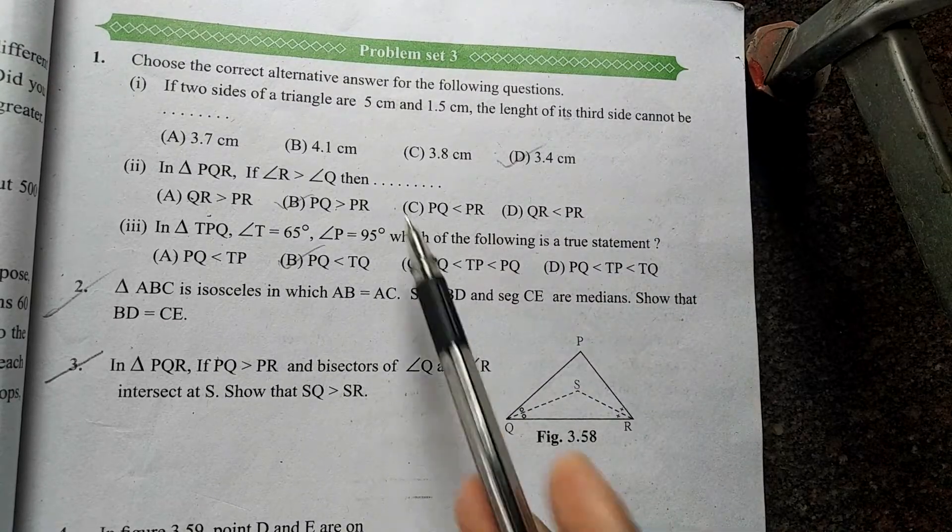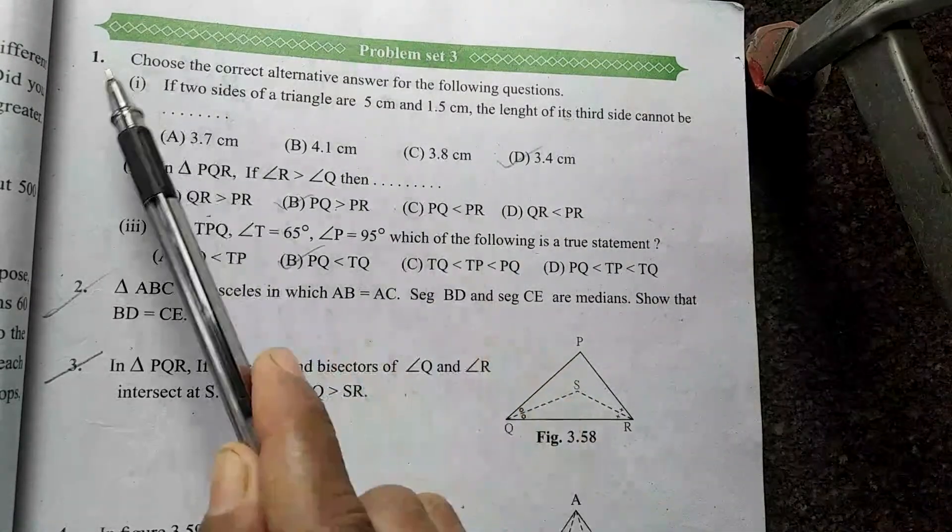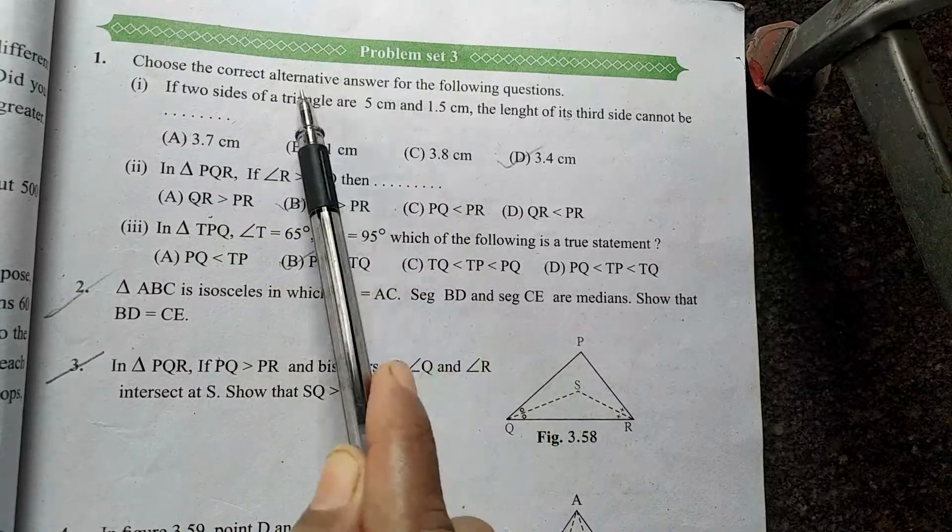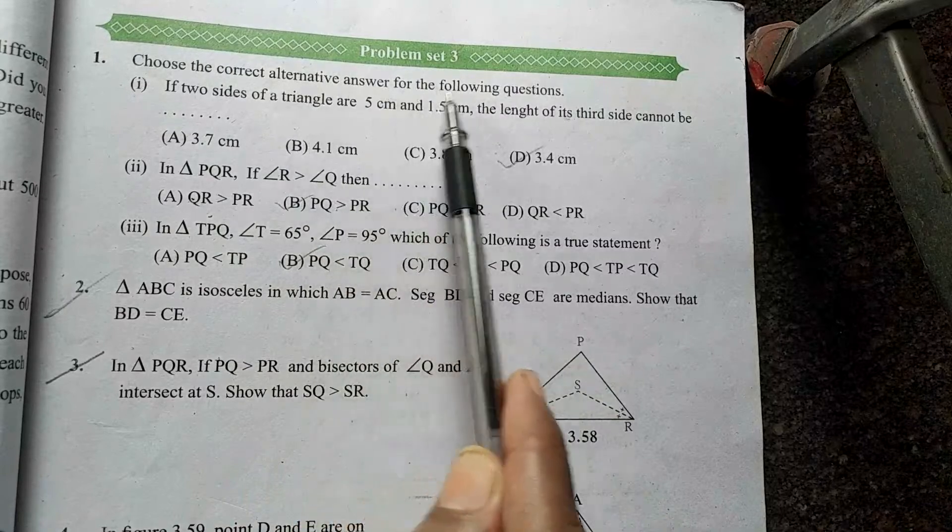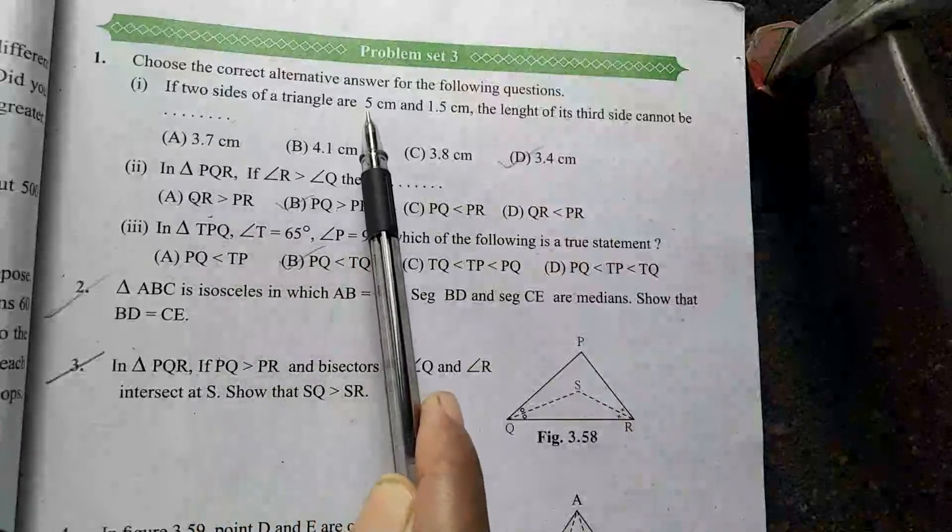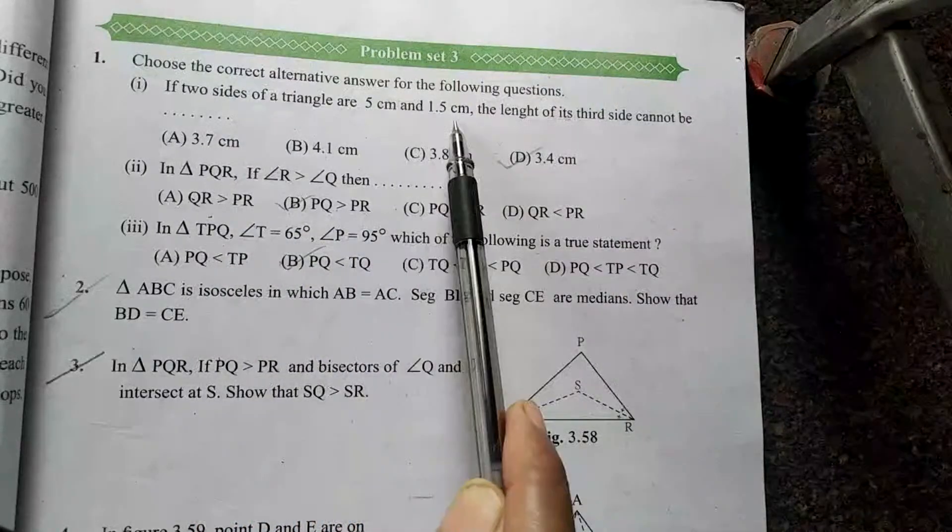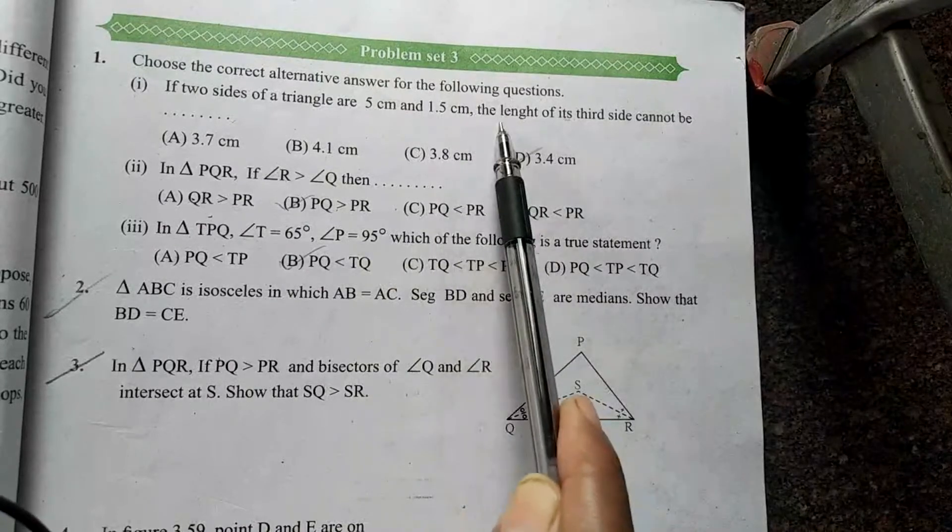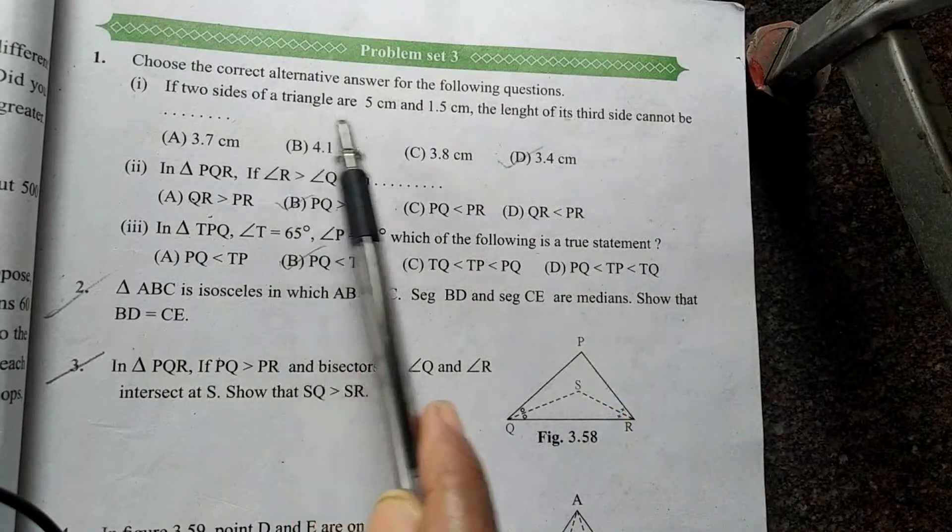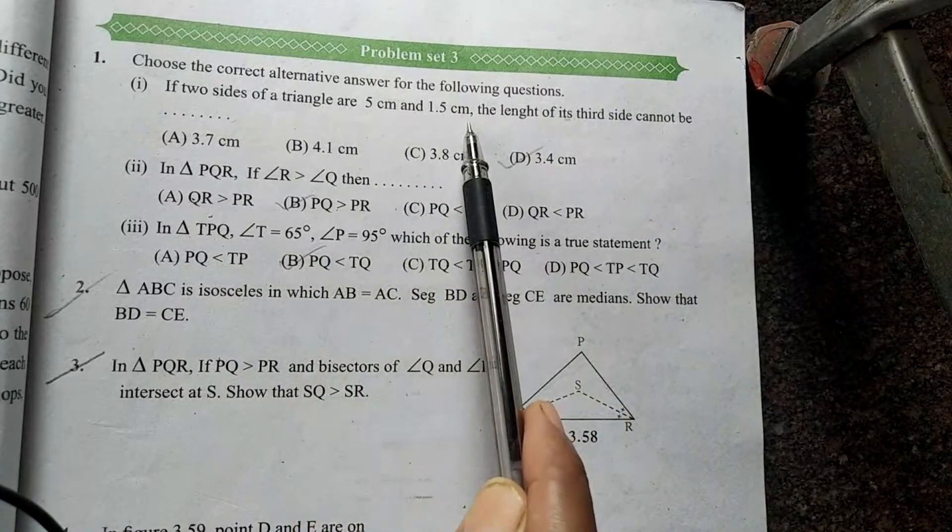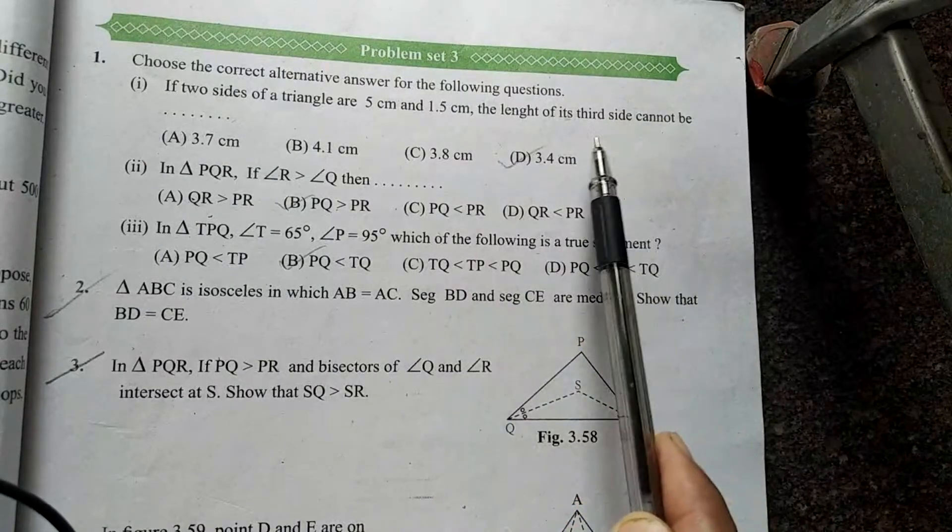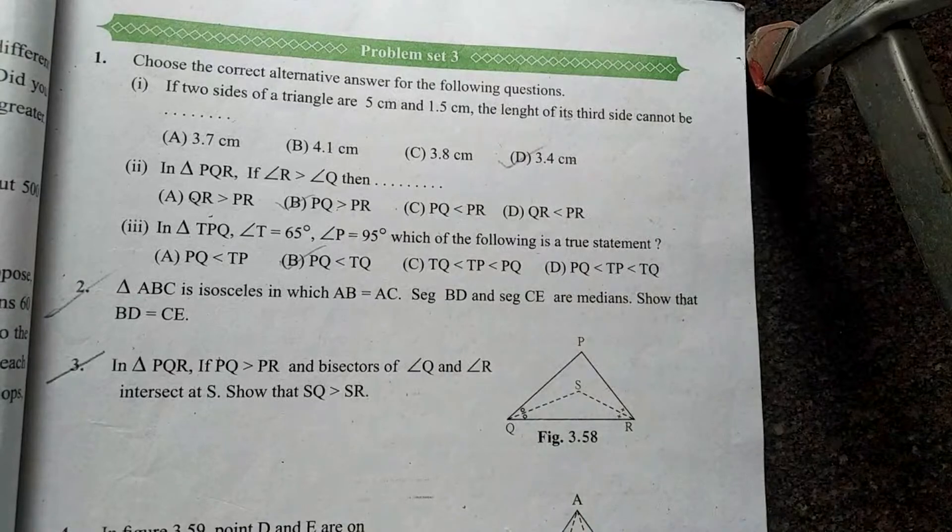Problem Set 3 is the first question. Choose the correct alternative answer for the following questions. If two sides of a triangle are 5 cm and 1.5 cm, the length of its third side cannot be. Now, we have two sides of the triangle and the third side cannot be. We will check this.